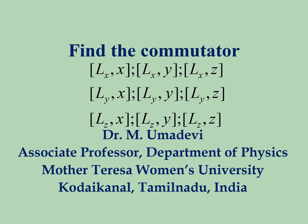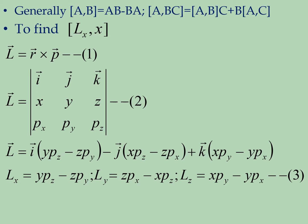Now we will see how to find the commutation relation between the different components of angular momentum like Lx, Ly, Lz and the position x, y, and z. The commutation relation between A and B is AB minus BA, and the commutation relation between A and BC is B times the commutation relation between A and C, plus the commutation relation between A and B, times C.